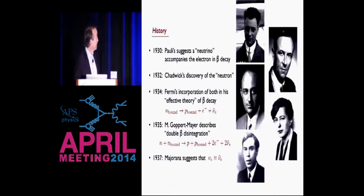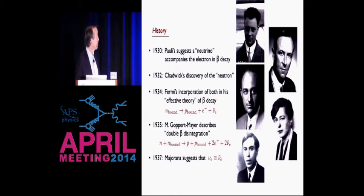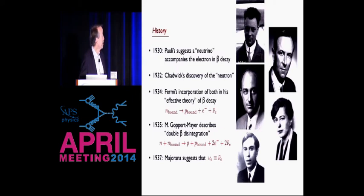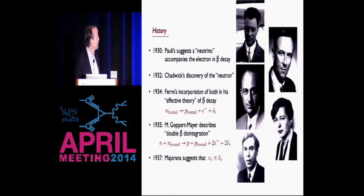The history fits right in with the development of single beta decay theory. It starts in 1930 with Pauli's suggestion of a neutrino. In 1932 Chadwick discovers the neutron. That was incorporated by Fermi in 1934 with his effective theory of beta decay, modeled after electromagnetism. Then just in 1935, one year later, Maria Goeppert-Mayer pointed out that in some nuclei beta decay might not occur, but there was another process — a second-order weak interaction process where two bound neutrons in a nucleus could decay into two protons, emitting two electrons and two of Pauli's antineutrinos.